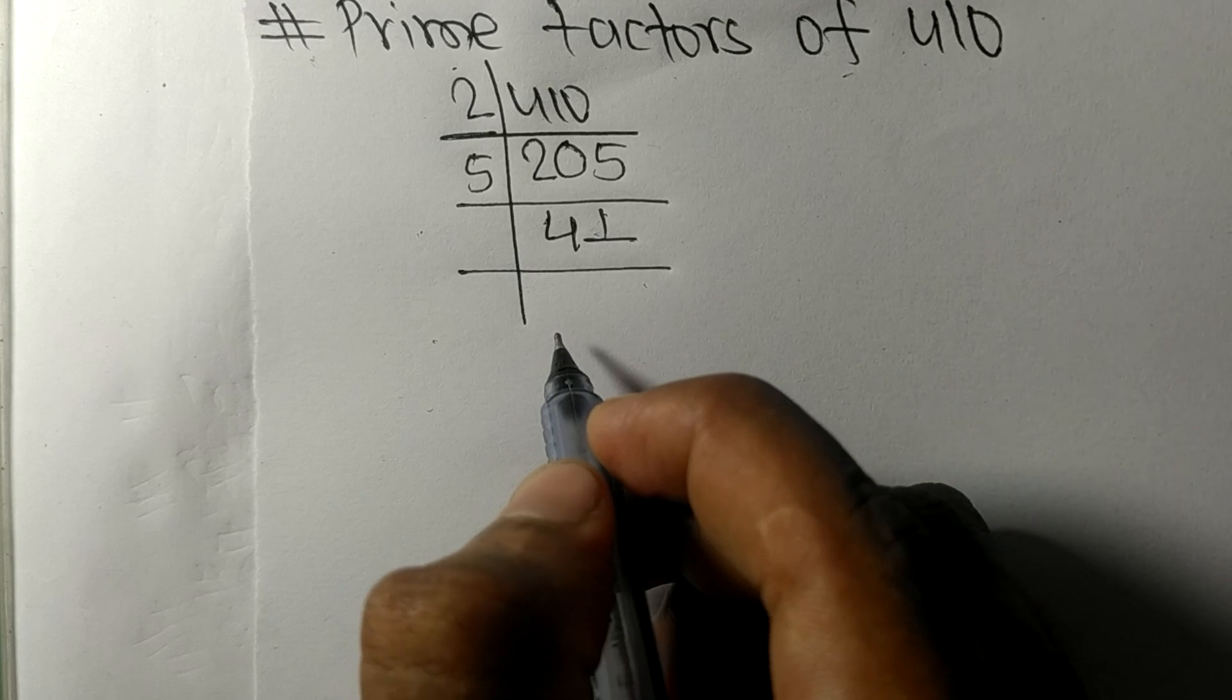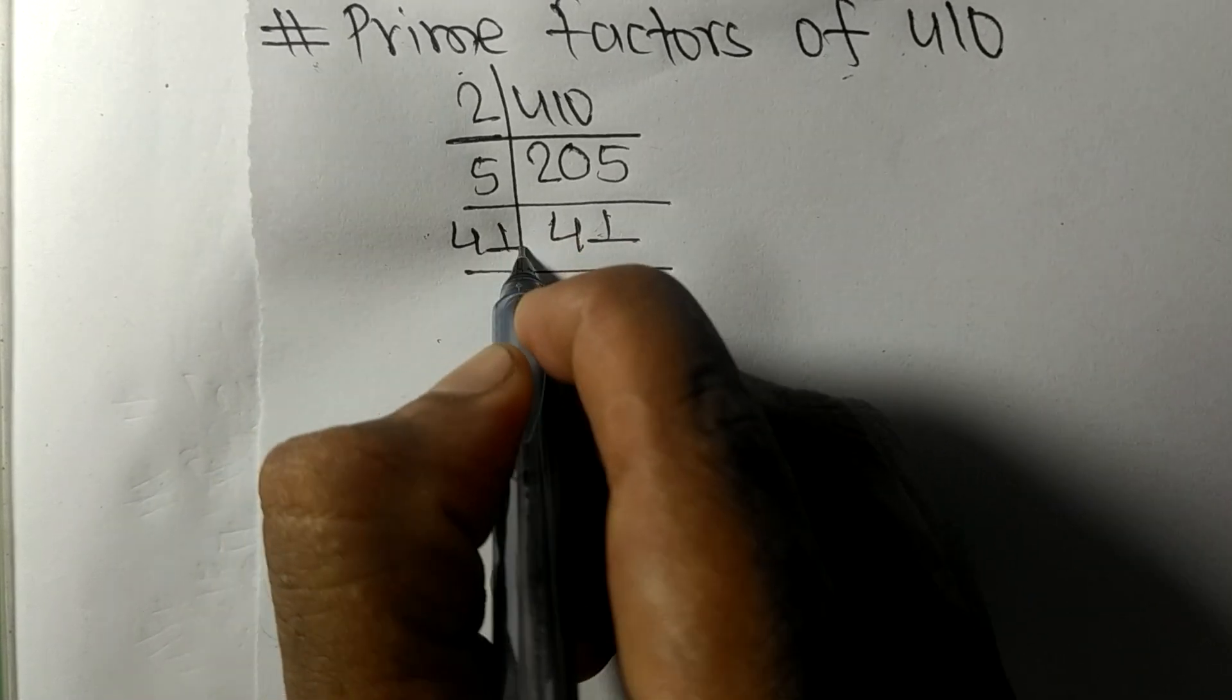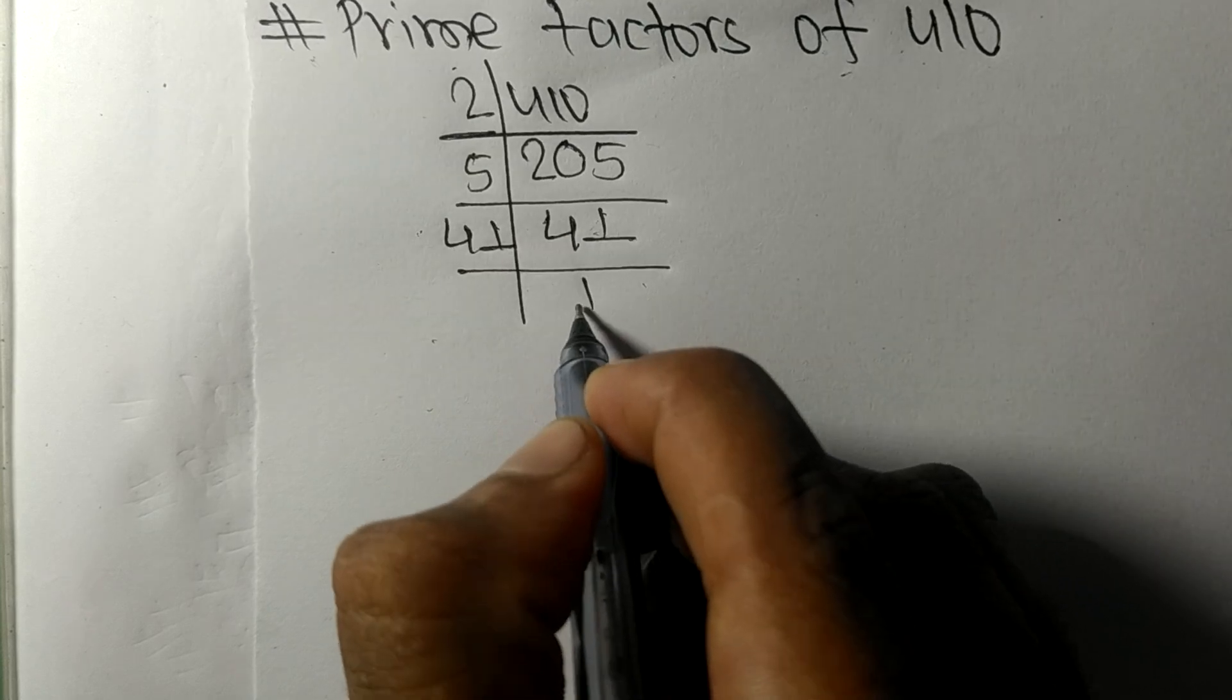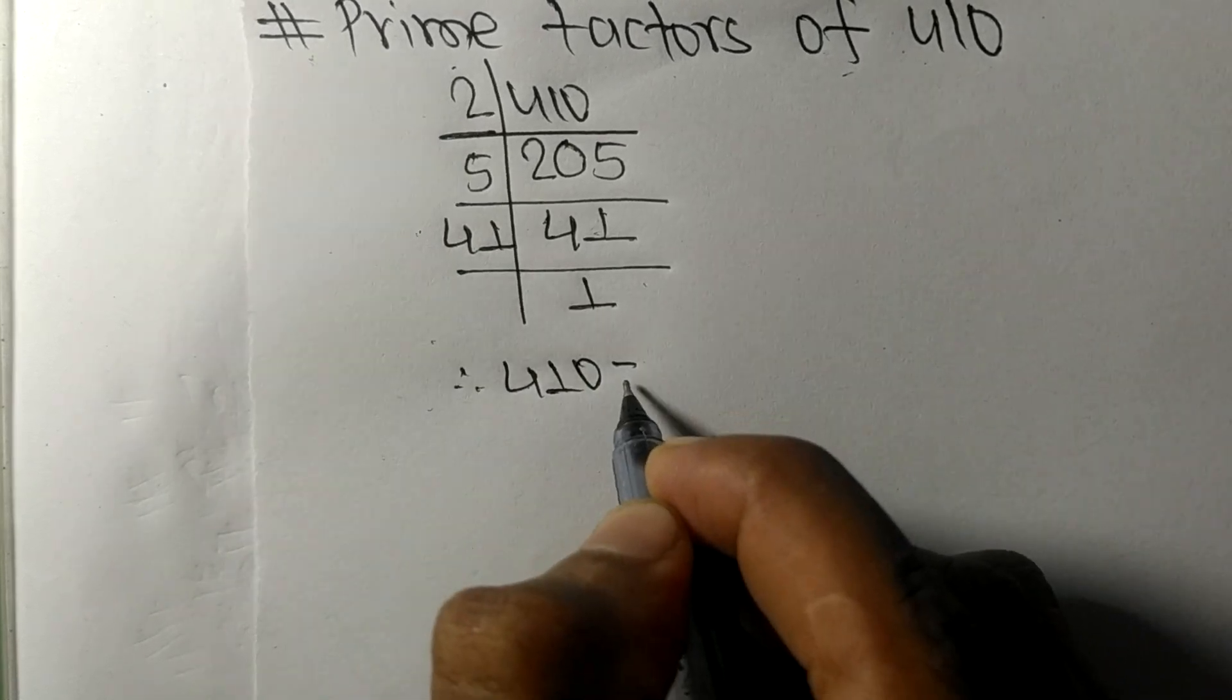41 is a prime number, so it is divisible by 41 itself, and we get 1. Therefore, 410 equals...